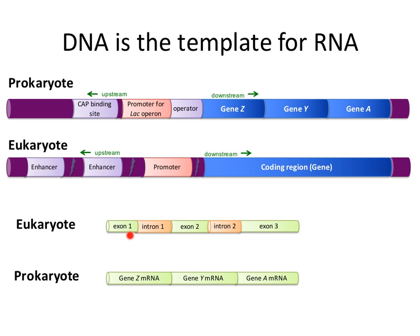What's interesting is that in eukaryotes, once the mRNA is transcribed, it contains pieces that will be removed — so not all of the sequence will be translated into protein. Some of those pieces, called introns, will be removed, and only the exons will be used for translation into protein.